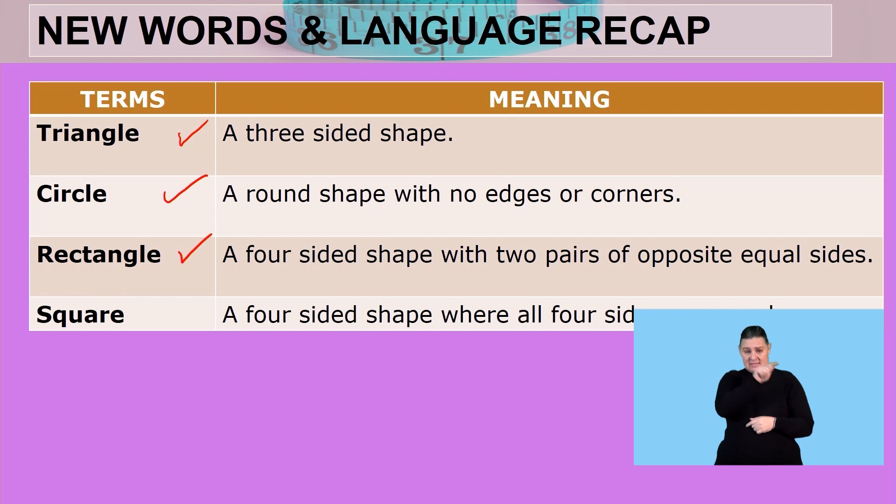Rectangle, a four-sided shape with two pairs of opposite sides equal. And finally, the square, a four-sided shape where all four sides are equal.